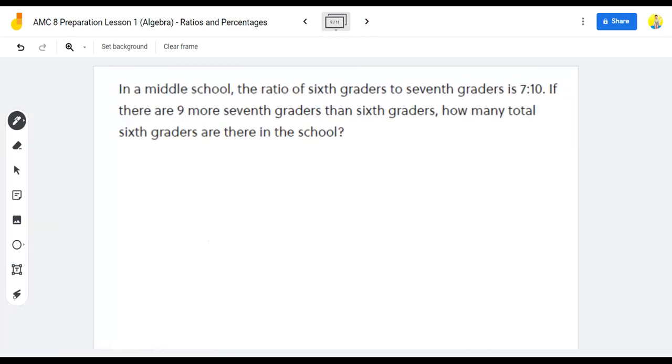In a middle school, the ratio of sixth graders to seventh graders is 7 to 10. If there are 9 more seventh graders than sixth graders, how many total sixth graders are there in the school? So in this problem, we simply say the number of sixth graders to seventh graders is 7x to 10x.